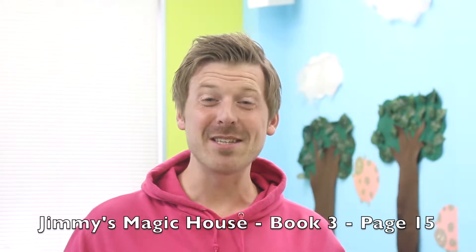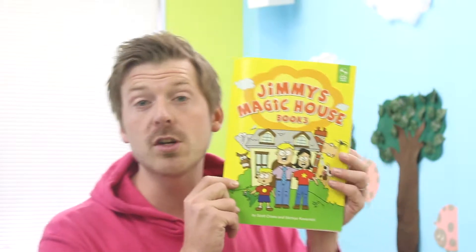Hi kids! Today we're going to do Jimmy's Magic House Book 3. That's the yellow book. Open your books to page 15. That's a 1 and a 5.